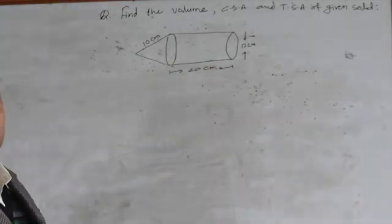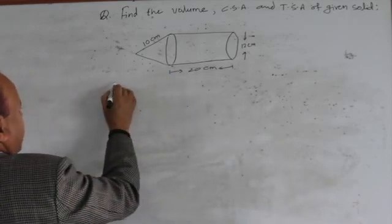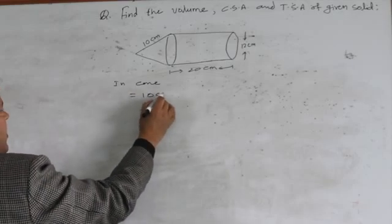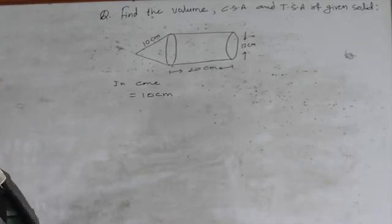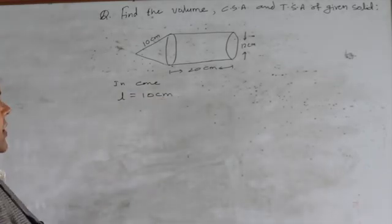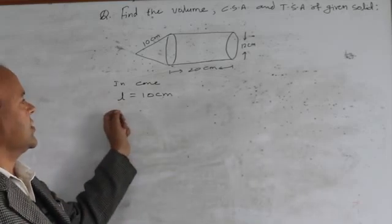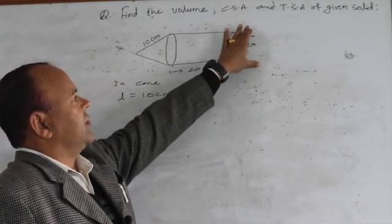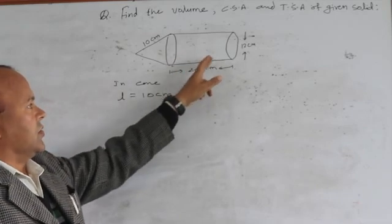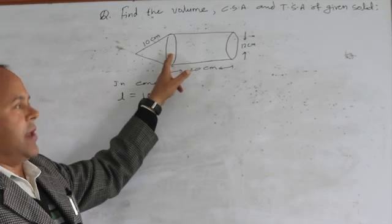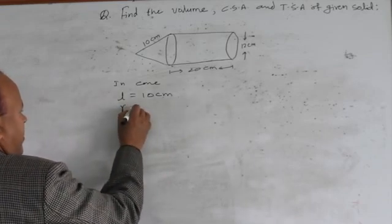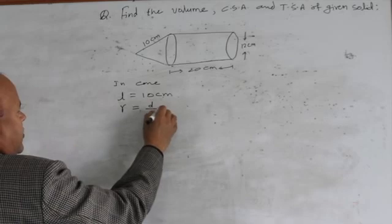Let us determine the given parts. For the cone, this 10 centimeter is the slant height, denoted by l — it is 10 centimeter. The radius of the cone is also given. This 12 centimeter is the diameter of the circular base of the cylinder, and the base of the cylinder and the base of the cone are the same — so the radius of both is the same.